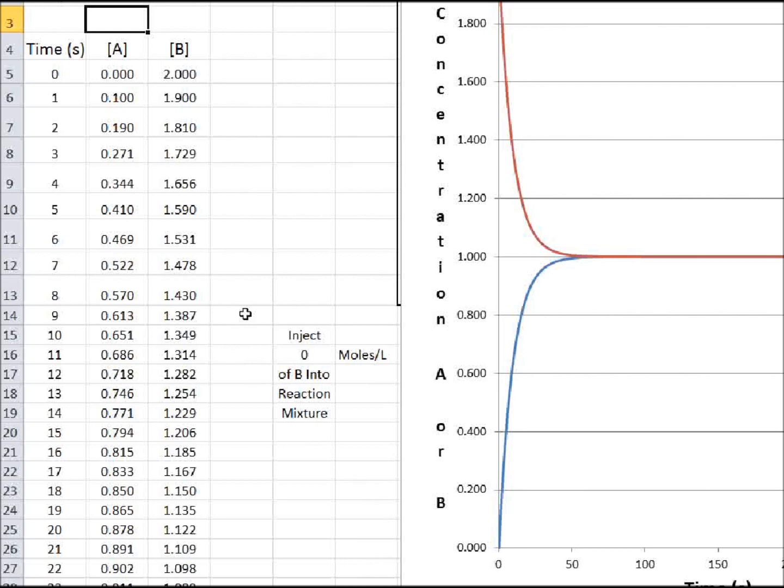Another game you could play with this simulation is, let's see what happens if I suddenly inject some B into the reaction mixture at 100 seconds. Now this cell here is linked up with the 100 second cell of B and it just adds the value that I have here. So I'm going to put one molar, one mole per liter of B into the reaction mixture at 100 seconds.